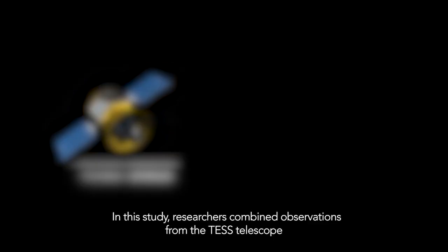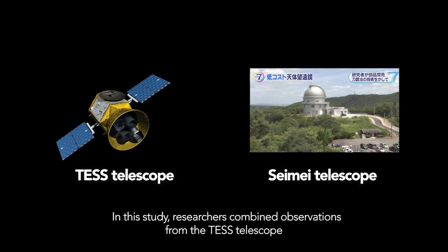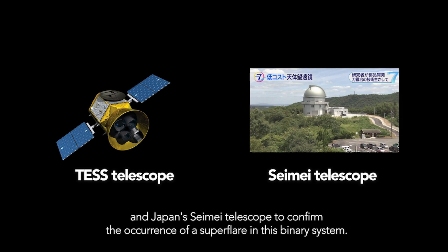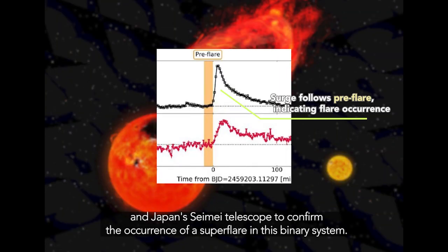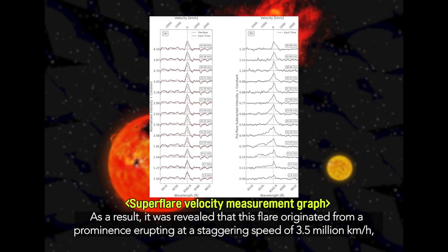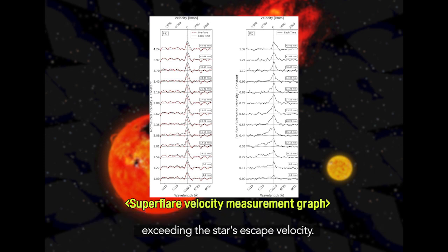In this study, researchers combined observations from the TESS telescope and Japan's Saimi telescope to confirm the occurrence of a super flare in this binary system. As a result, it was revealed that this flare originated from a prominence erupting at a staggering speed of 3.5 million kilometers per hour, exceeding the star's escape velocity.